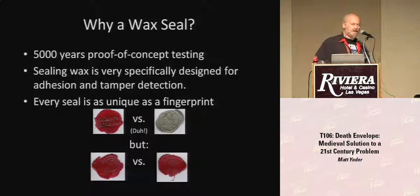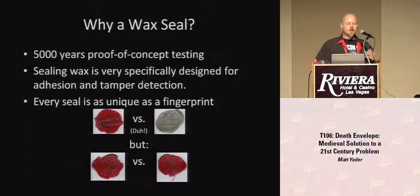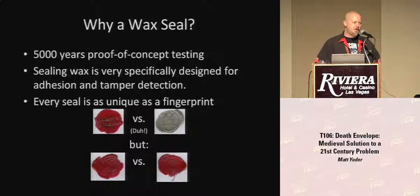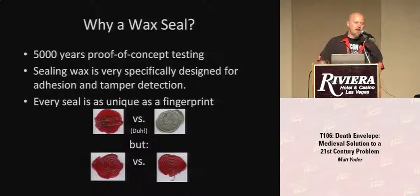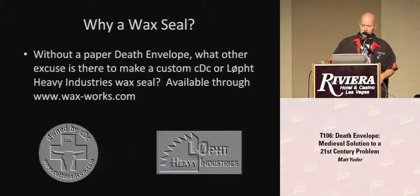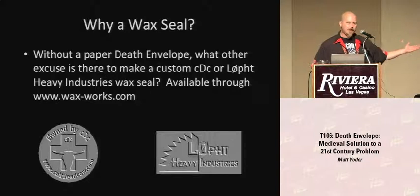A wax seal — I can't really emphasize this more. This is how you want to seal your envelope. There's 5,000 years of proof-of-concept testing: wax seals have been found on Egyptian papyrus, they were hugely popular in the Middle Ages, and even now sealing wax is specifically designed to adhere firmly and strongly to paper and break up when you get into it. Additionally, they are as unique as a fingerprint — everyone's seal is going to show up differently. If someone has access to your wax and your stamp, chances are good that if you have a photograph, you'll still be able to tell the difference between the seal you made and the seal they made.